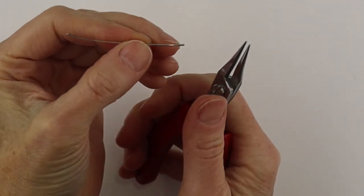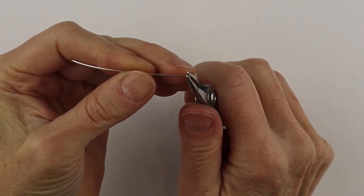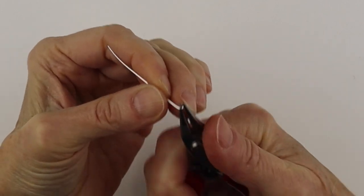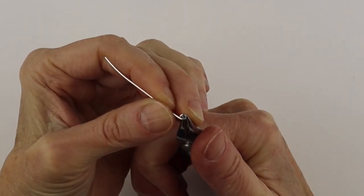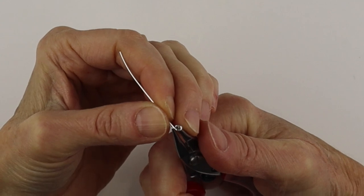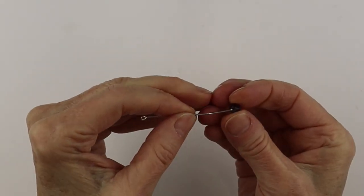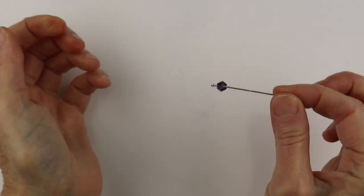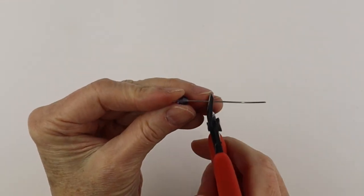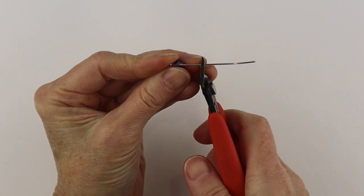And if you want to add a bead, you can get a head pin or make your own head pin with 20 gauge wire. Just one end with the round pliers, you're going to wind a little loop. This is a little six millimeter faceted bead.